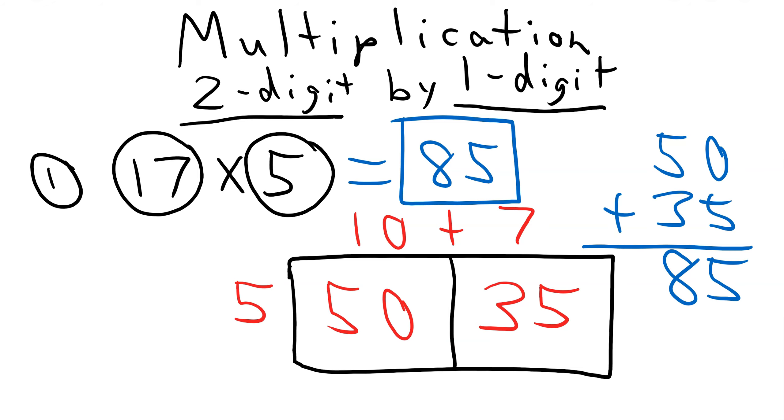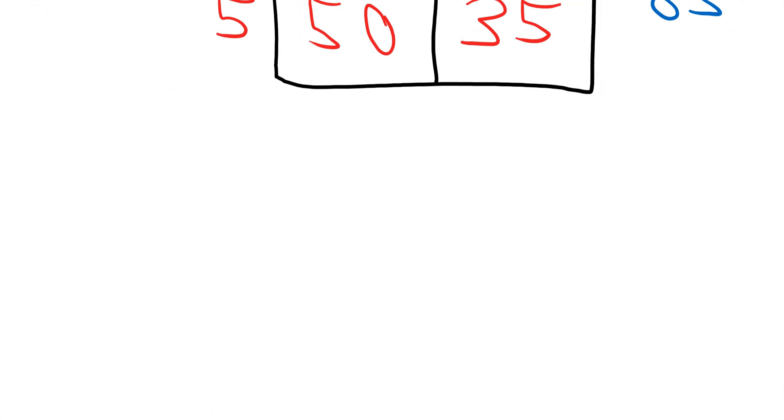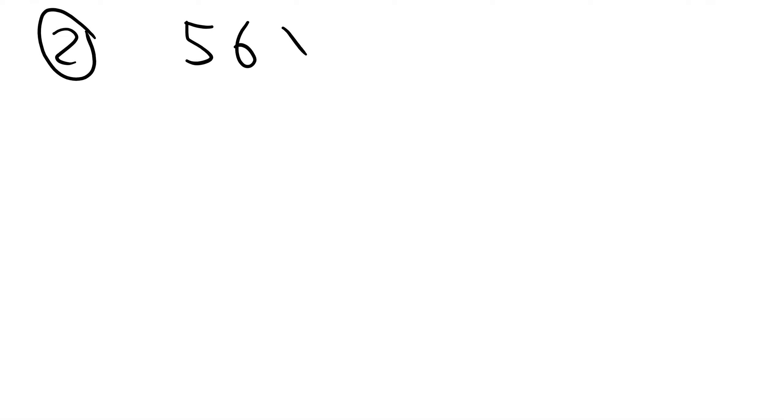Okay. We will do one more problem. Example number 2: 56 times 8. Our first step is to note that there are a two-digit number and a one-digit number. That means that our generic rectangle will have two boxes. Two going this way, and one going this way. Two columns in one row.